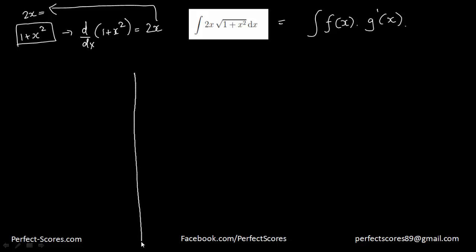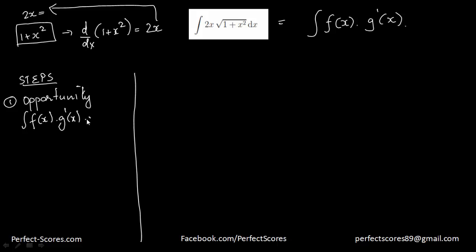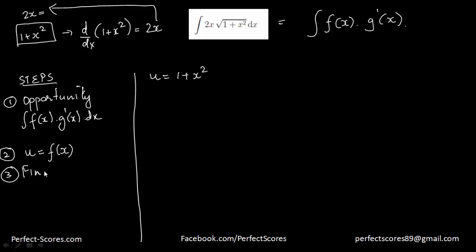Now I'm going to show you the steps. Step 1 is identifying the opportunity: whenever you find an integration of the form f(x)·g'(x), you can do integration by substitution. Step 2: pick a variable u and set u equal to f(x). Here I set u equal to (1 + x²). Step 3: find du/dx, which should equal g'(x). Here du/dx equals 2x, which is indeed g'(x).